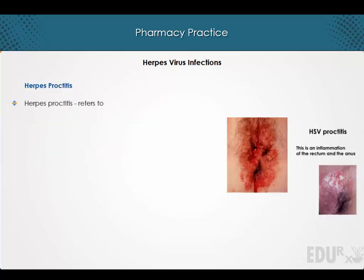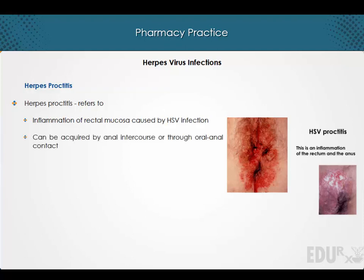Herpes proctitis refers to the inflammation of the rectal mucosa caused by herpes simplex virus infection. It can be acquired by anal intercourse or through oral-anal contact. Symptoms include anorectal pain and mucopurulent or bloody rectal discharge.